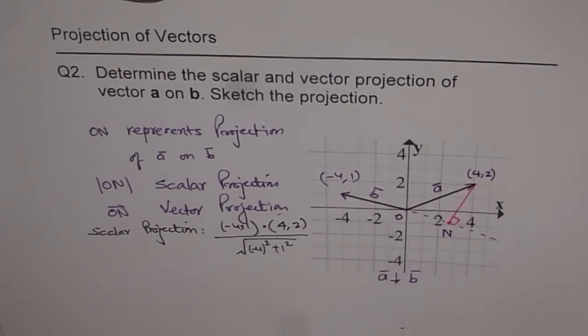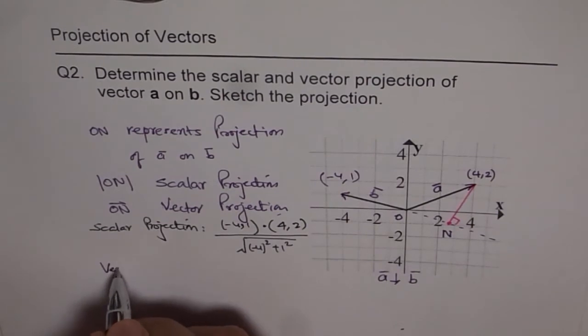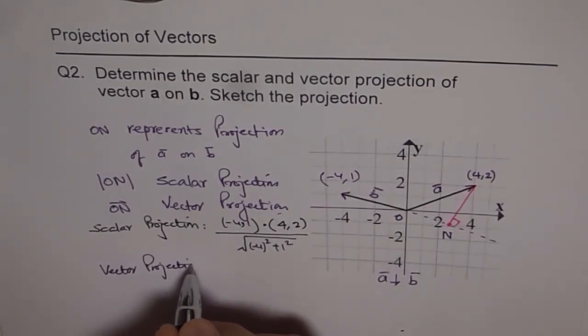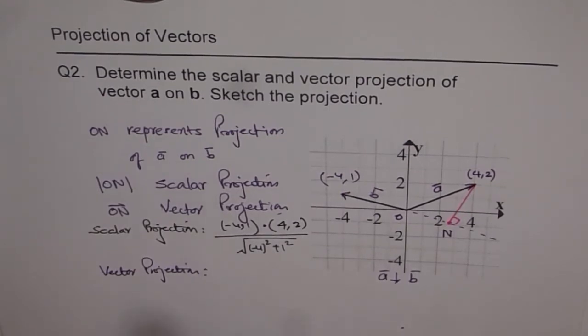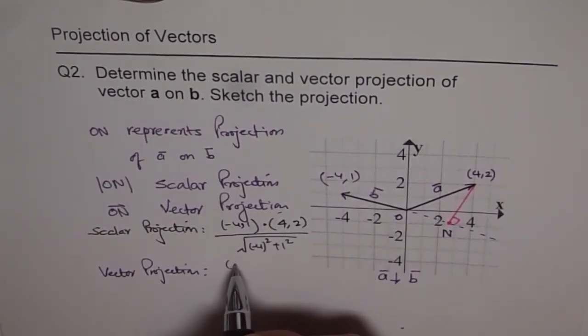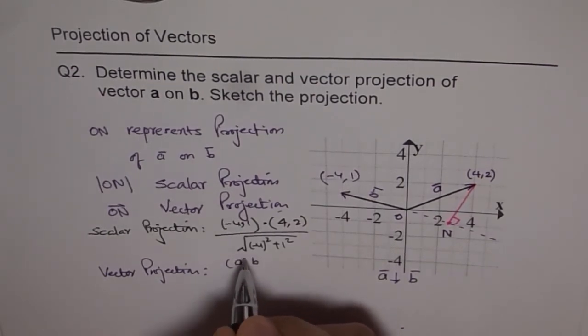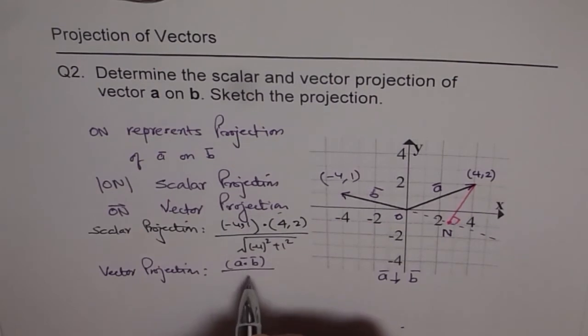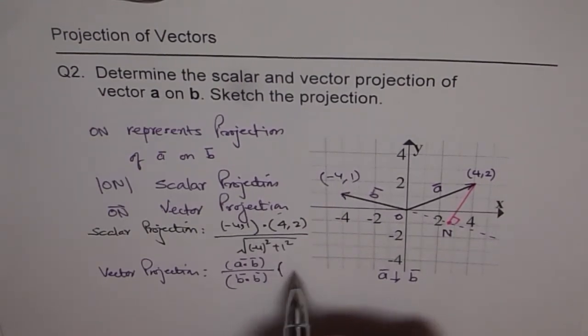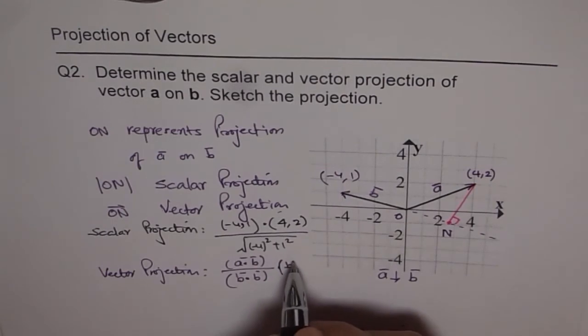And vector projection is the scalar projection times unit vector in the direction of B. So in this case, we can write vector projection as we have dot product of A and B in the numerator. So let me write this as A dot B in the numerator and B dot B in the denominator times, I should say times, is a scalar multiple of vector B. So that is the vector projection.